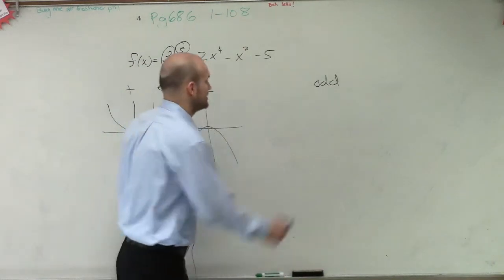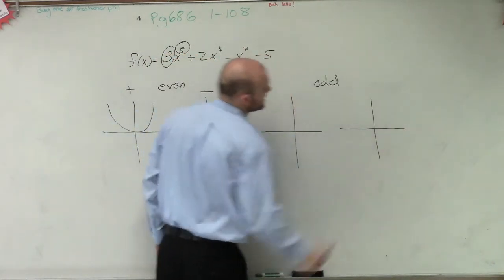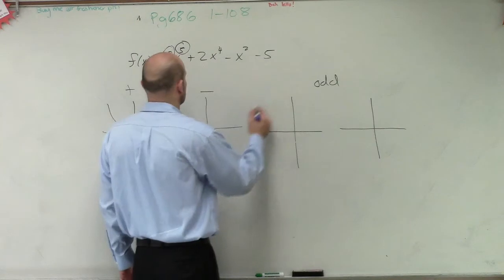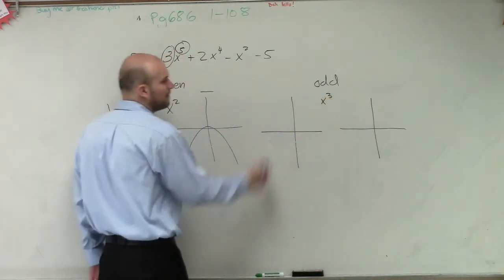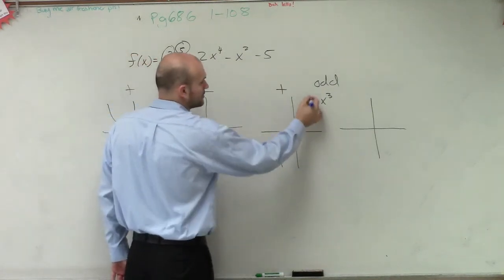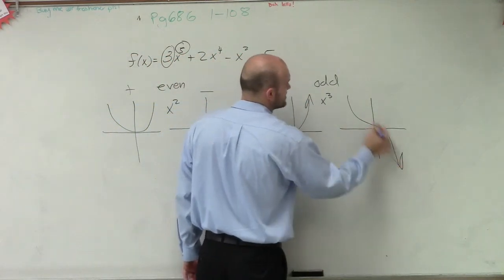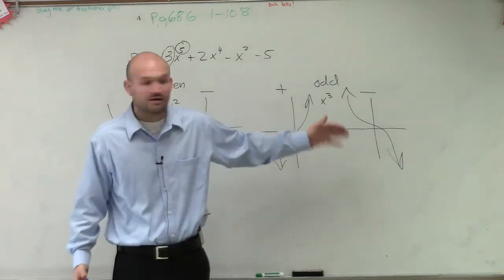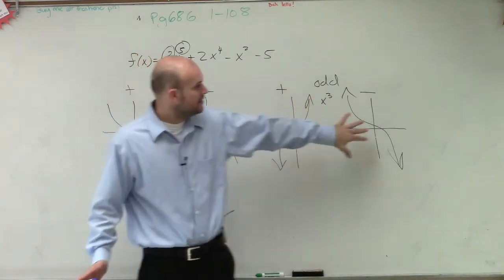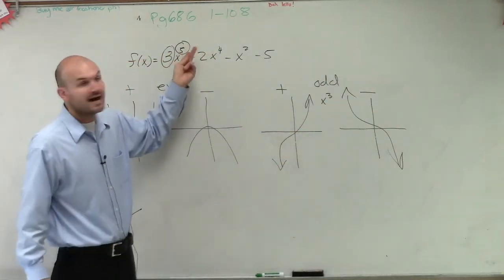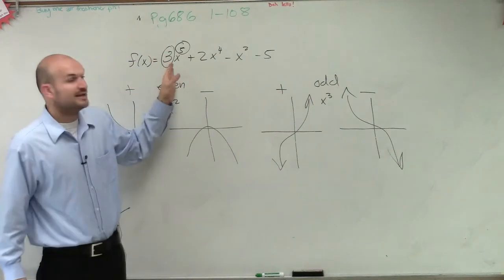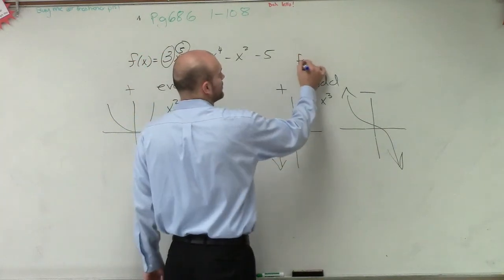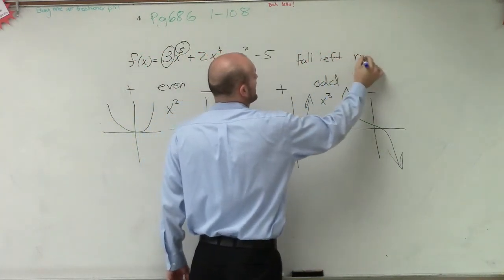Let's look at the odd ones. Odd has the same components, but the end behavior is a little bit different. This was an x squared function — let's do an x cubed. The positive x cubed looked like that, and the negative looks like this. This works for all odd functions. All odd have the same end behavior: for a positive leading coefficient, it falls left and rises right. For a negative, it rises left and falls right. I have an odd degree, so it's going to be one of these two. My leading coefficient is positive, so it's going to fall left, rise right.